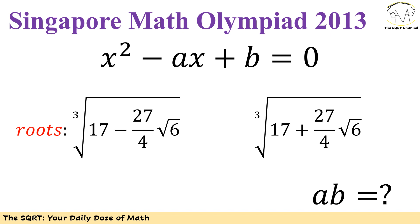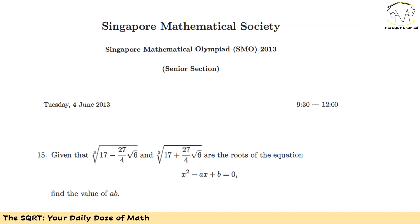In this problem we have x² - ax + b = 0. We know that this equation has two roots. Based on the problem we are given the two roots that you are seeing here. We are going to find a times b. This is the original problem that appeared in SMO 2013, problem number 15. Let's see how we are going to solve this problem now.